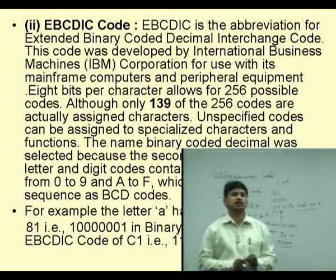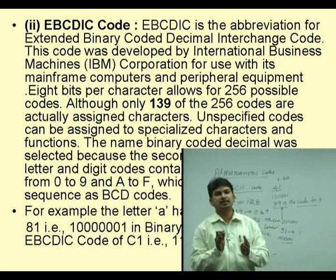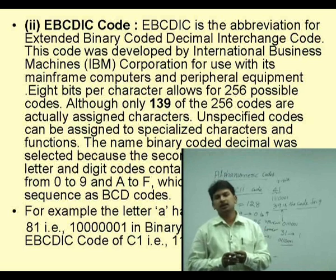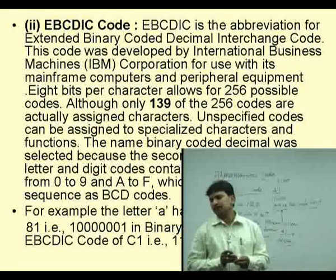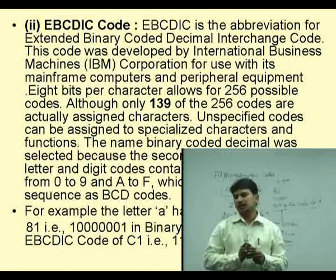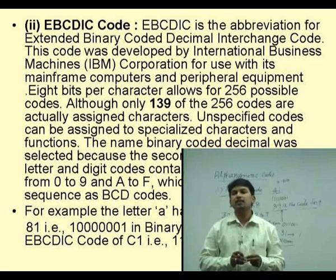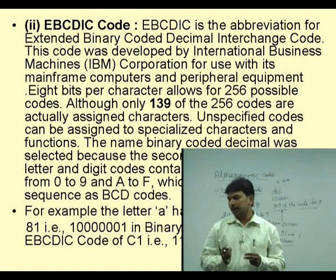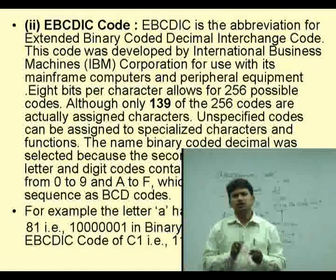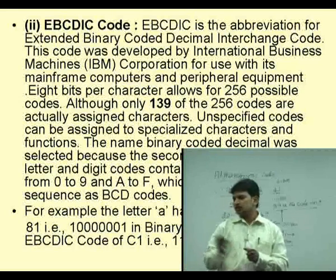The next code is EBCDIC. It is also an example of an alphanumeric code. Alphanumeric means the code which consists of alphabetical characters and numbers. EBCDIC stands for Extended Binary Coded Decimal Interchange Code. This is also an alphanumeric code where each code is represented by 8 different bits.